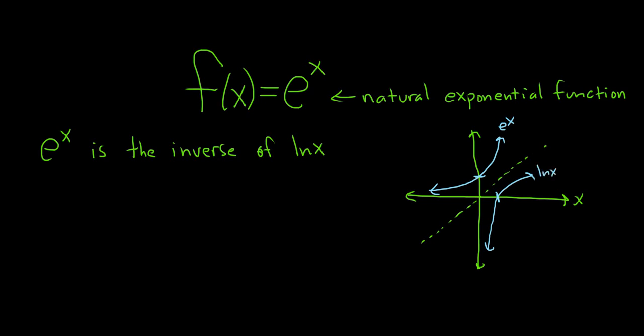They're inverse functions. They undo each other. So there is a formula. If you take the derivative with respect to x of e to the x, you simply get e to the x. This is not true for other exponential functions like 2 to the x or 3 to the x. Hence the name natural.